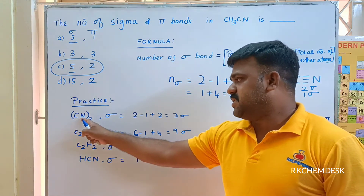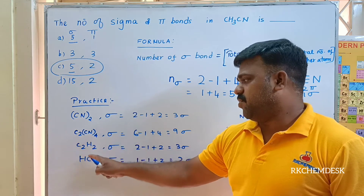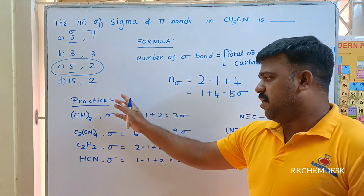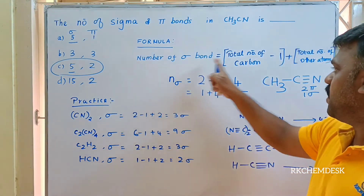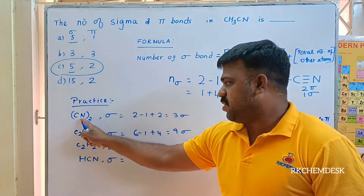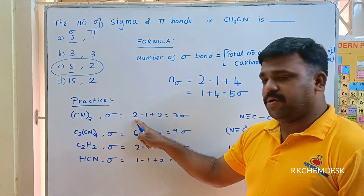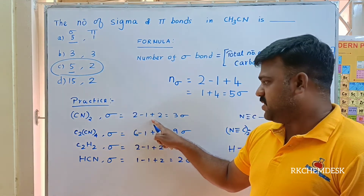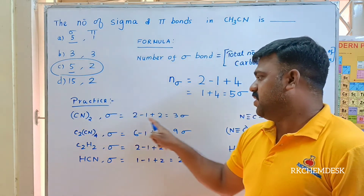Practice example: for CN₂, calculate the sigma bonds using the formula. Total carbon number is two, so two minus one, plus total other atoms — two nitrogen — equals one plus two, giving three sigma bonds.